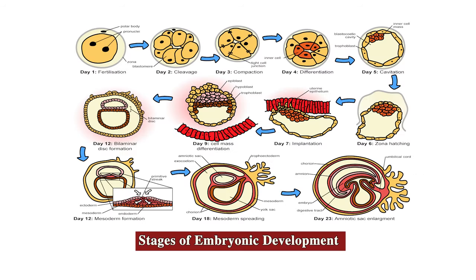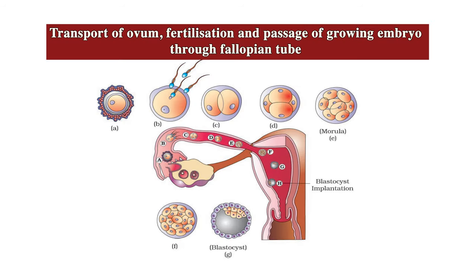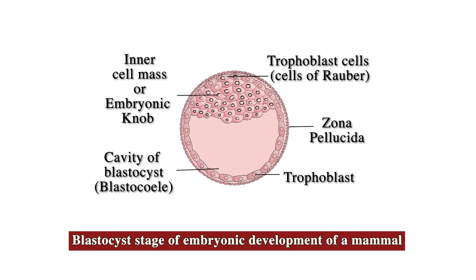The human zygote develops into the human adult through a series of developmental stages. This exercise will help the learners in understanding the blastocyst stage of human embryonic development and the distinctive features of the blastocyst explained through the slide and photographs. The labeled diagram of the blastocyst helps to distinguish it from the previous stage, morula, and the later stages of embryonic development.